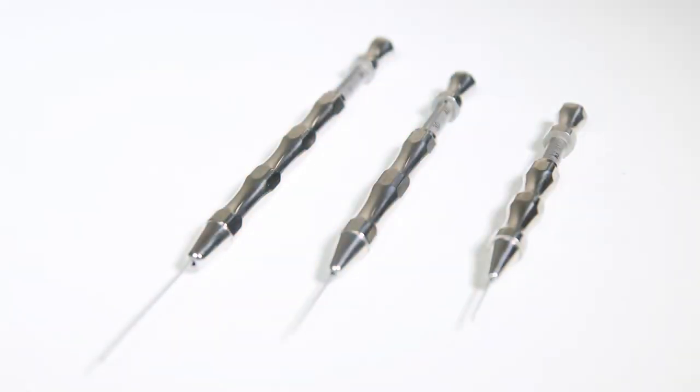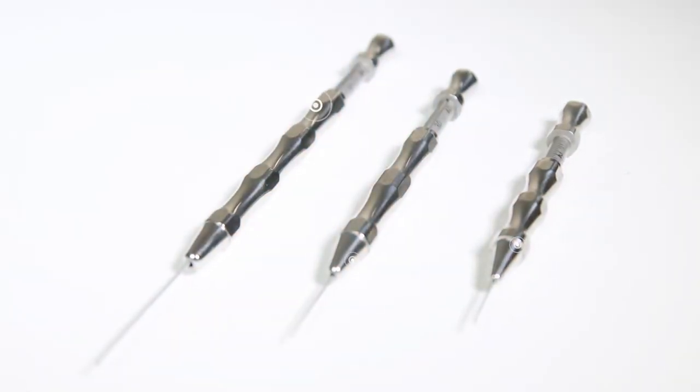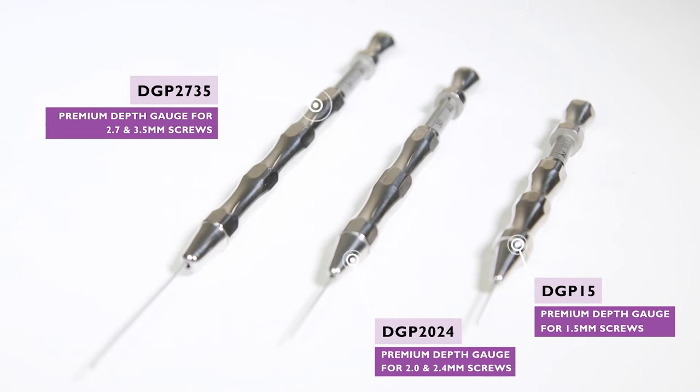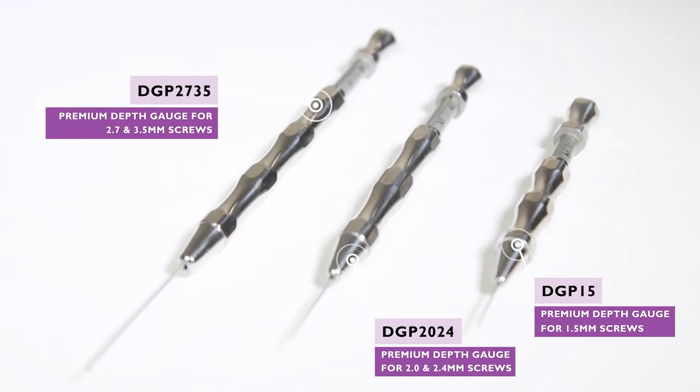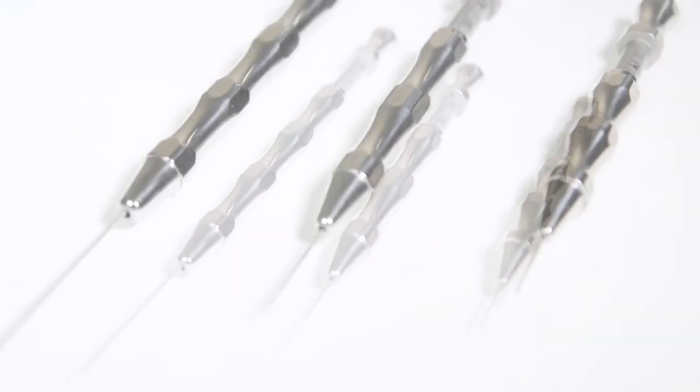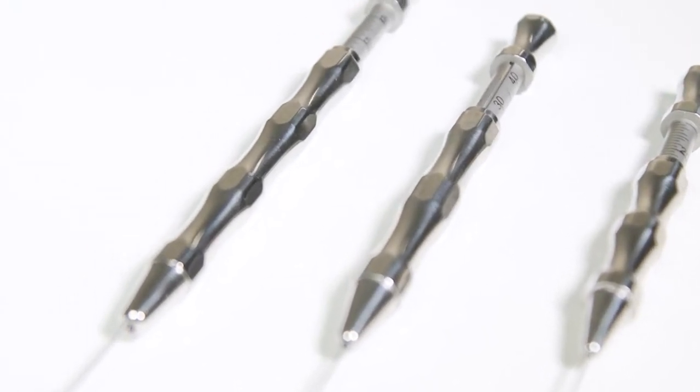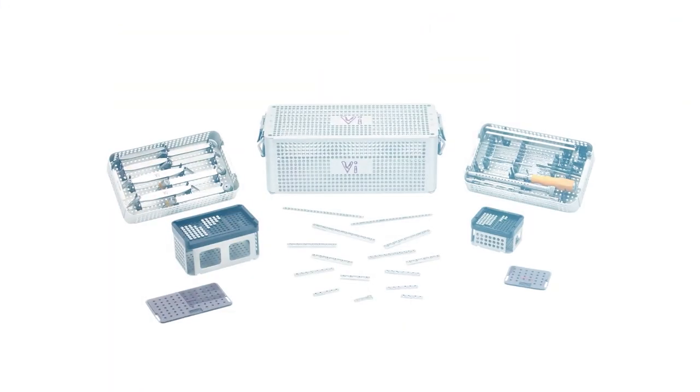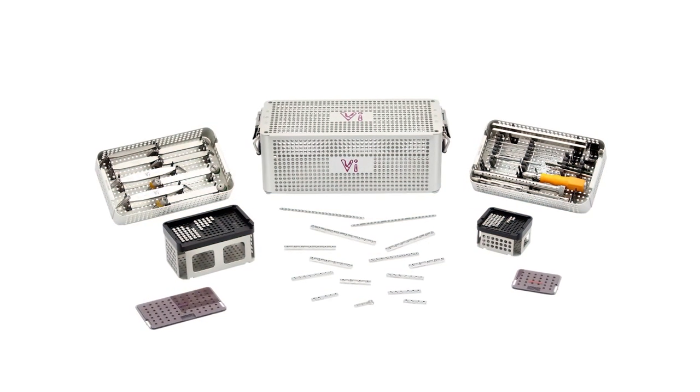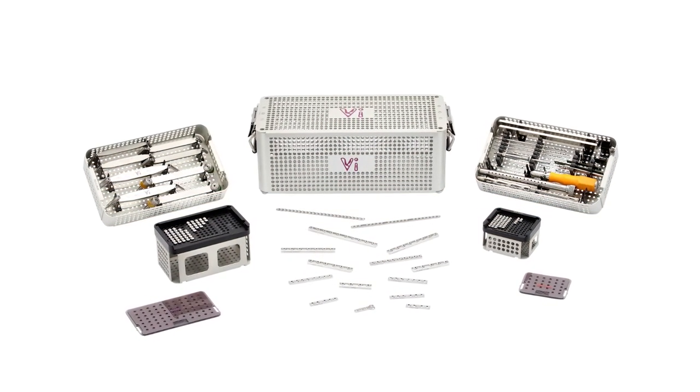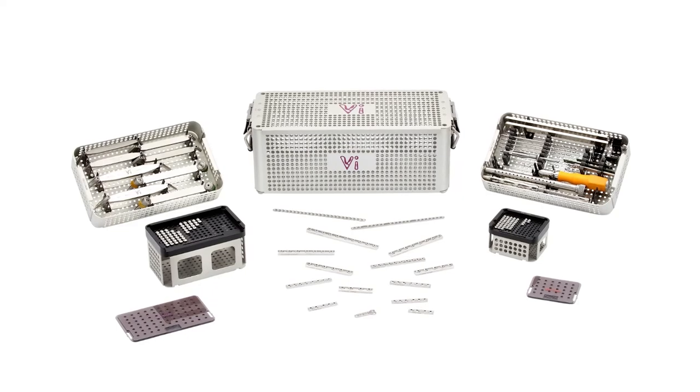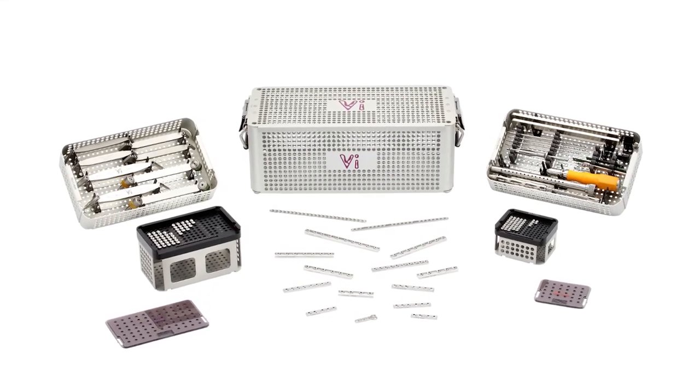VI supply a range of depth gauges. Here we see the premium range available from VI. These devices are size specific, according to the size of implant being used. Cortical plating kits are supplied with the appropriate size depth gauge as a standard component of the kit, but they are also available separately.